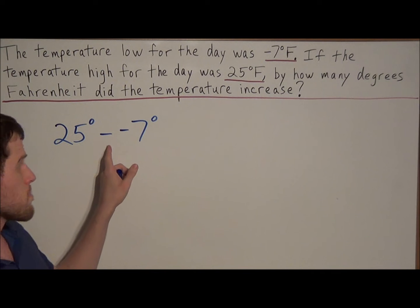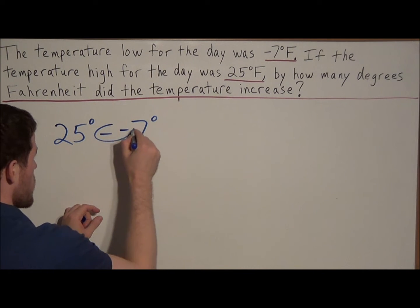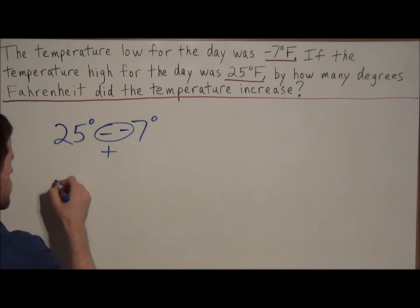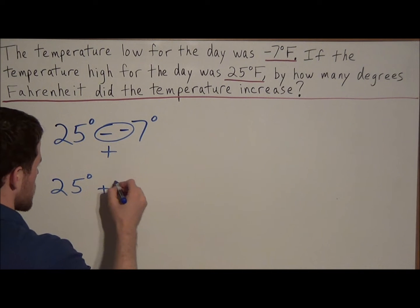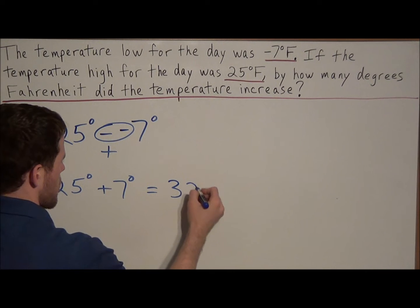And notice this integer problem here, we have two negatives. So when we see two negatives, we know that this operation is going to change to addition. So what we really need to answer is what is 25 degrees plus 7 degrees. And this is equal to 32 degrees.